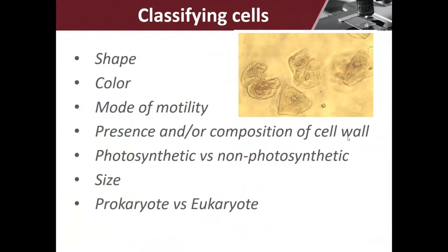Whether or not a cell has a cell wall also helps us — some cells do, some cells don't. We talked about photosynthetic versus non-photosynthetic, which kind of goes with color. And then size — what would be the size range for a eukaryotic cell? If I measured one of those cells that had an internal compartment, what might be the range? Good — 10 to 100 micrometers. That's just a normal range.